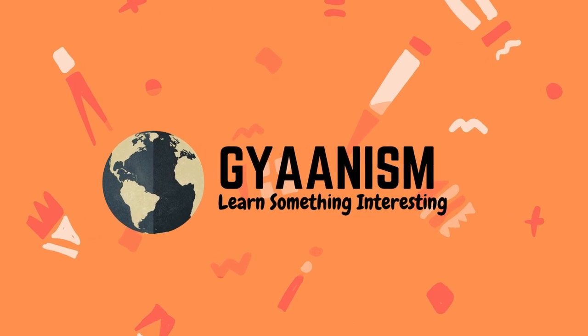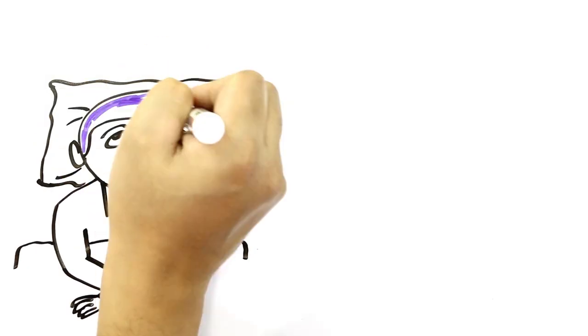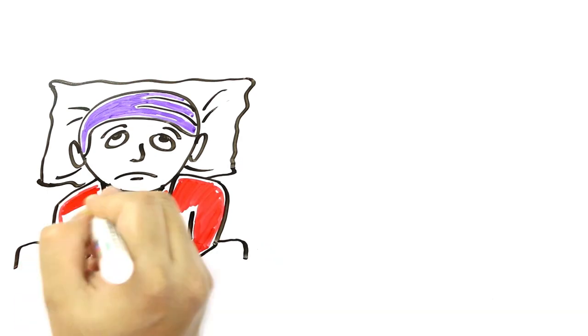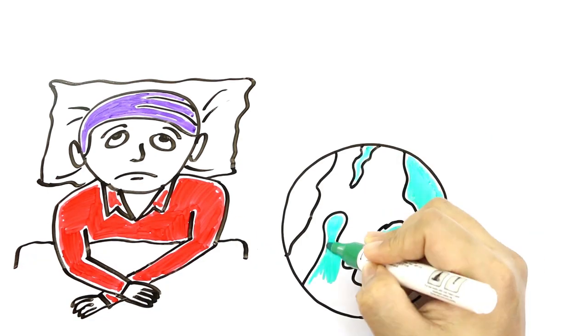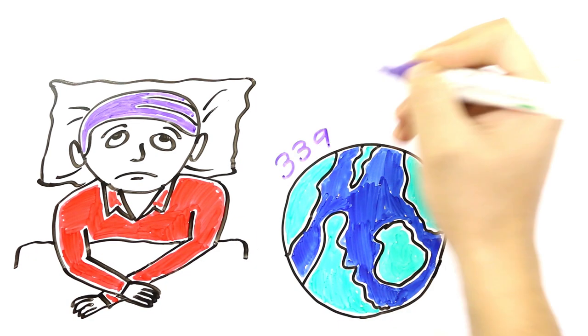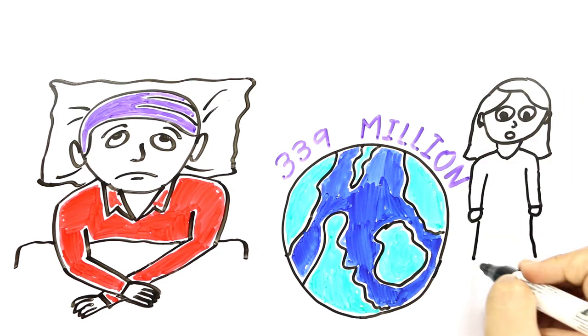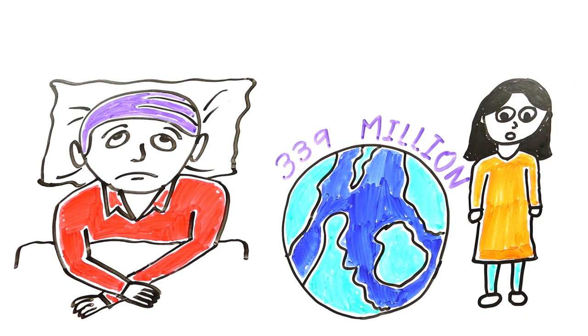Asthma kills around a thousand people every single day, that's 365,000 people a year, and it affects as many as 339 million people every single year. But why do people get asthma and how is this disease deadly? Let's find out in this video.